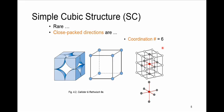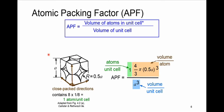The coordination number, which is the number of nearest neighbors as you can see in this picture, is 6. One of the features we try to find in crystal structures, including simple cubic, is the atomic packing factor, shown as APF.